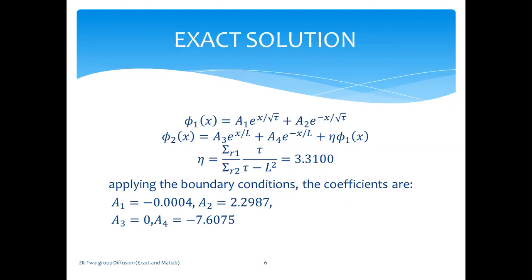So, having said that, let's get to the exact solution. Now, the fast flux governing equation is a homogeneous second-order ODE. I am not counting S because we'll introduce that through the boundary condition, through the Neumann boundary condition. So we can directly obtain a complementary solution for φ1, which comes out to be A1 e^(x/√τ) plus A2 e^(-x/√τ). Tau is the neutron slowing down area.